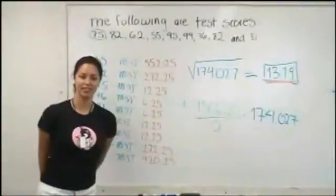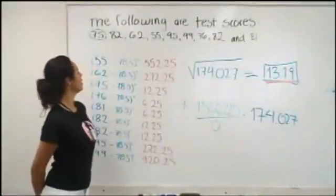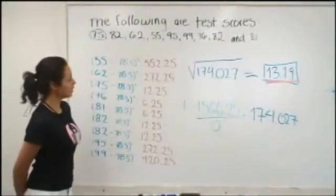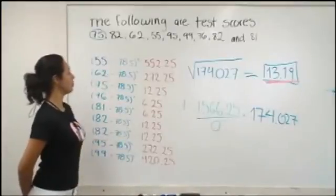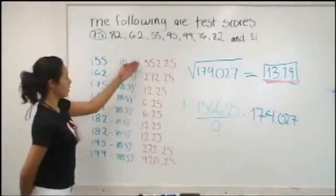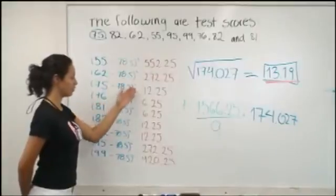So what we're going to do now to find the standard deviation is subtract the mean from each test score and get the square value of each difference.